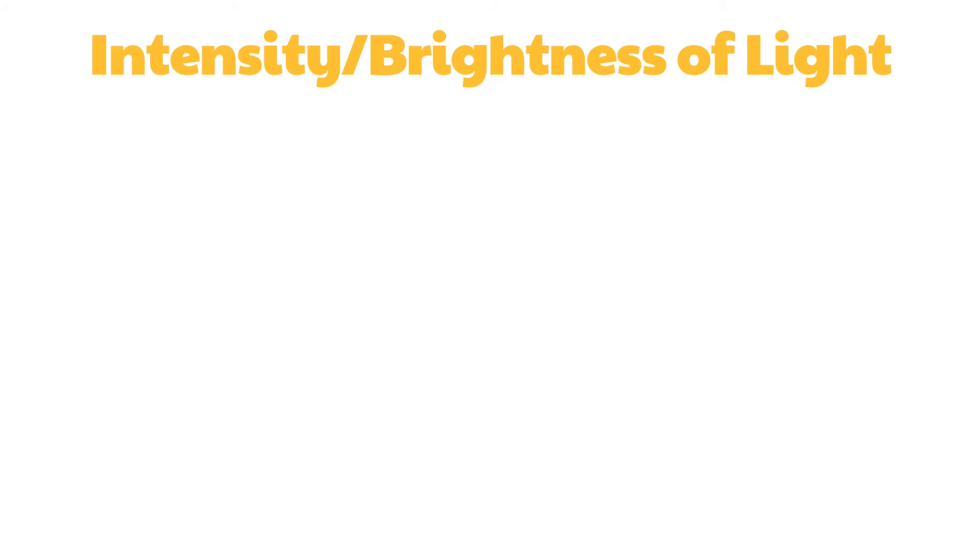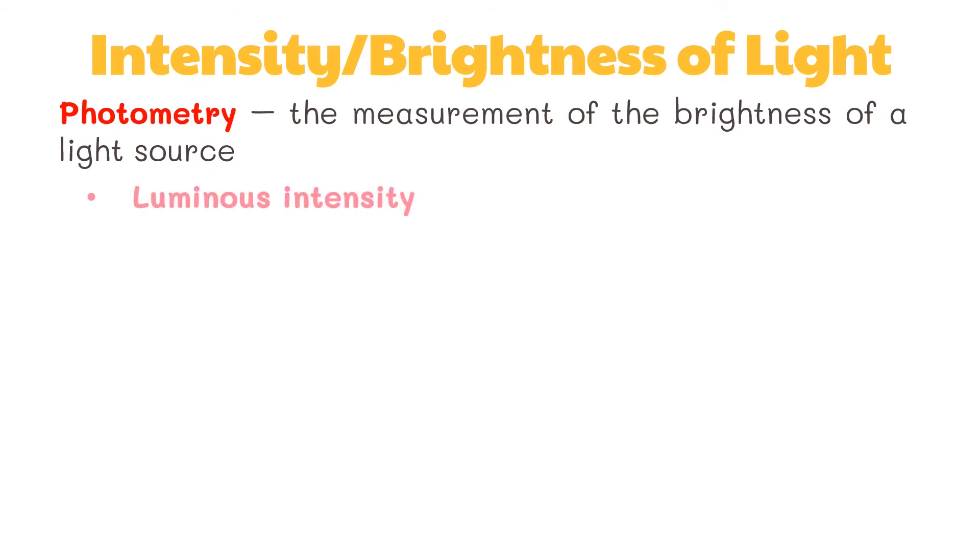The measurement of the brightness of a light source is known as photometry. There are three measurable quantities of light, namely luminous intensity, luminous flux, and illuminance.